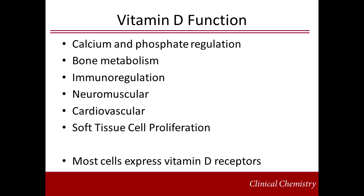Vitamin D has a number of functions in the body. The best known function is controlling circulating calcium and phosphate. Produced primarily by the kidney, 1,25-hydroxyvitamin D directly increases intestinal absorption of both calcium and phosphorus, increasing their concentrations in circulation. 1,25-hydroxyvitamin D is also involved in bone formation, resorption, and mineralization. The mechanisms of bone remodeling are quite complex and beyond the scope of this short vignette.